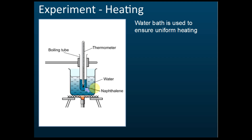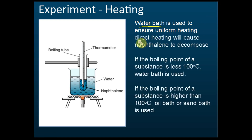We put this test tube inside the water and use the water to heat the naphthalene — this technique is called the water bath. We use a water bath to ensure uniform heating, because direct heating will cause naphthalene to decompose. If you heat the naphthalene directly with the flame from a Bunsen burner, the naphthalene will be decomposed.